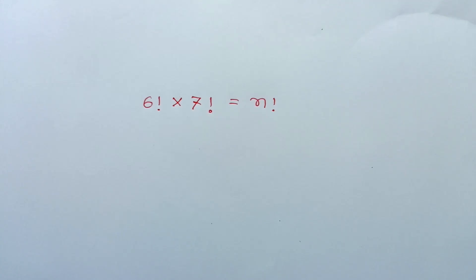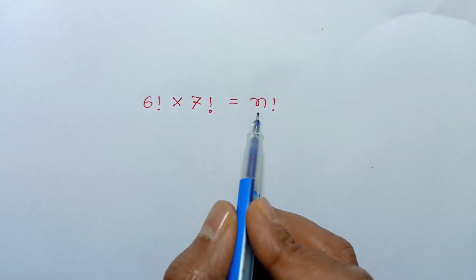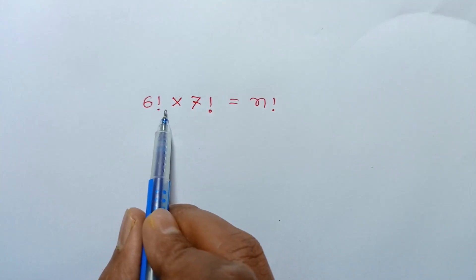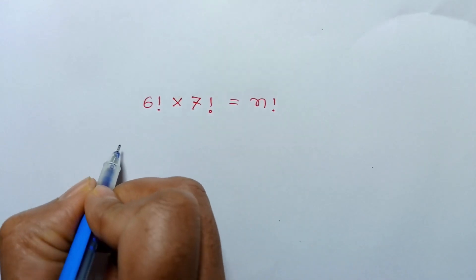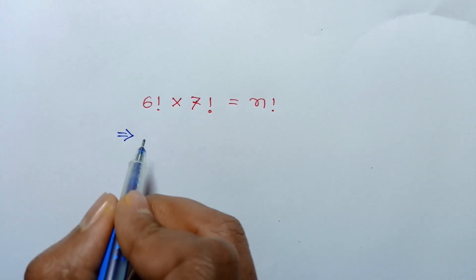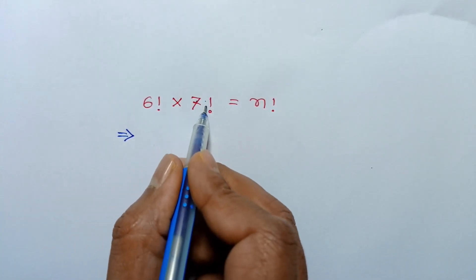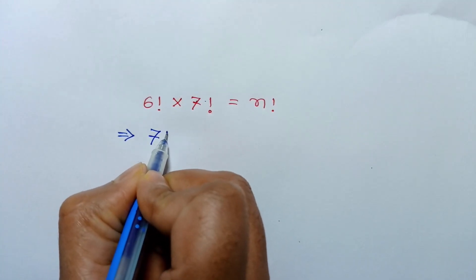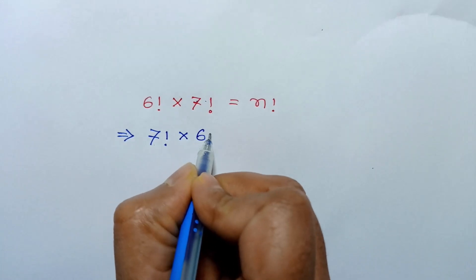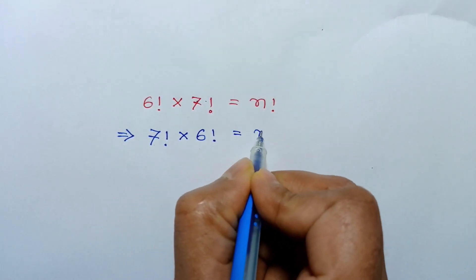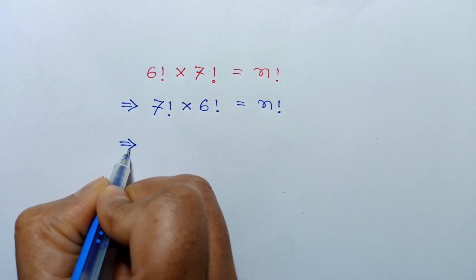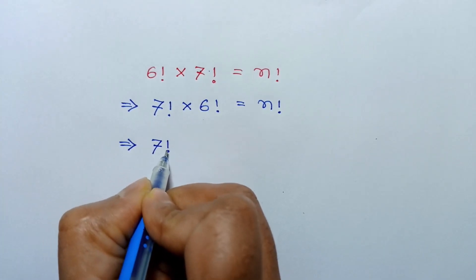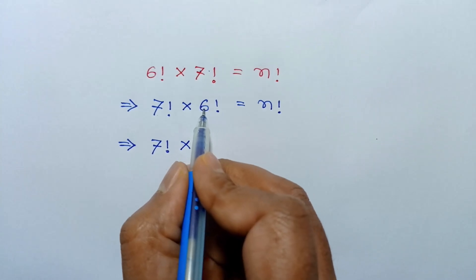Hi everyone. In this video I am going to show how to find the value of n where 6 factorial times 7 factorial is equal to n factorial. Rearranging this term, we can write it as 7 factorial times 6 factorial is equal to n factorial.